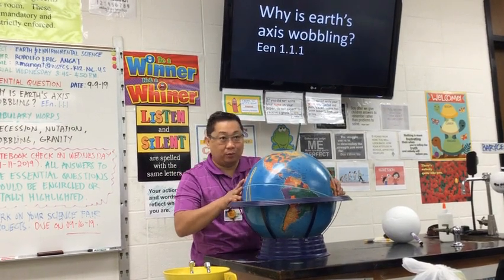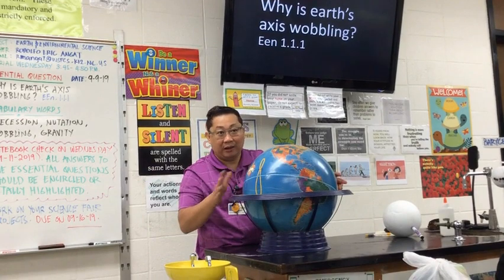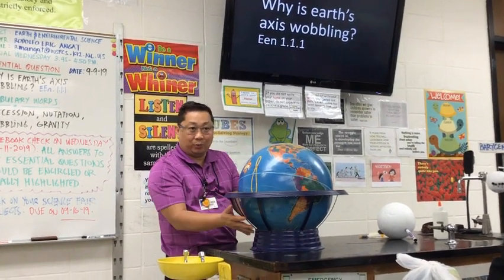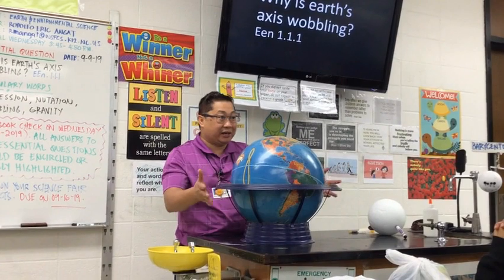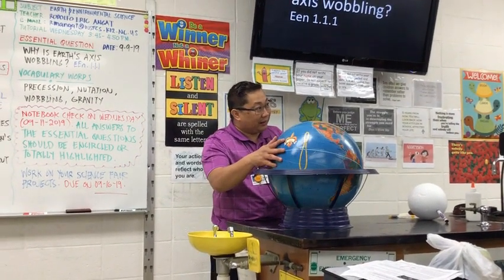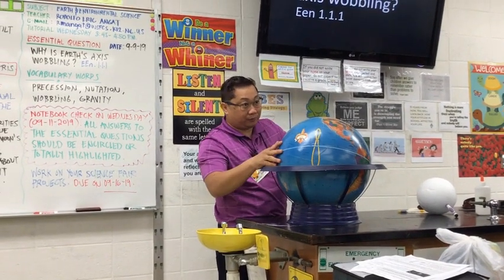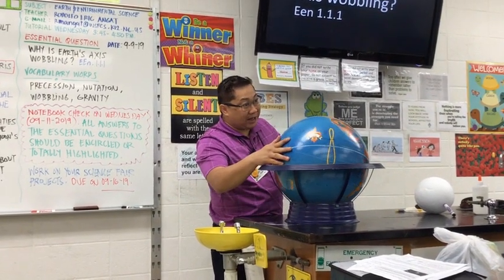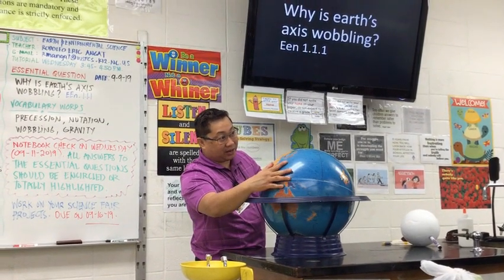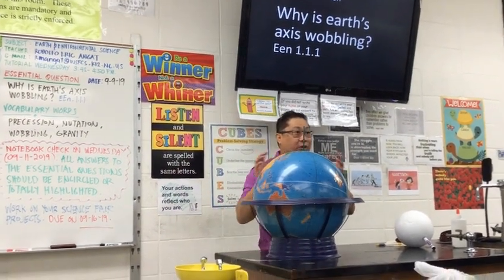This globe causes the axis to wobble because of the friction that is happening between the globe and its container. So it's wobbling — it's like creating a cone shape. See that? It's not stationary. The same thing is happening on Earth.